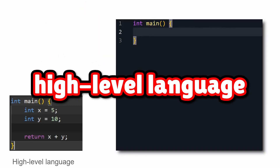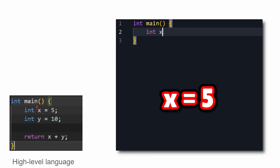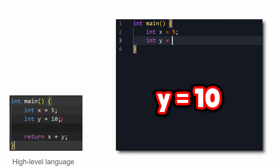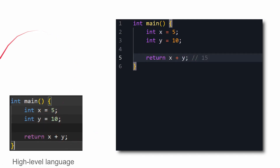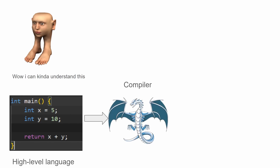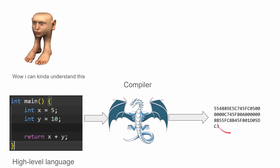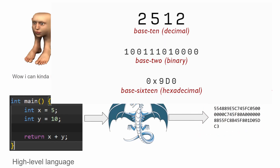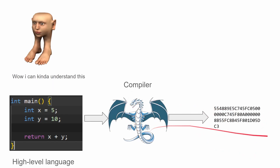So we start here with a high-level language. You can see we have x equals 5, y equals 10, and x plus y equals 15, right? It's understandable for humans — as you can see, this human right here says he can kind of understand this, which is good. Now what we do is pass it onto a special program called the compiler, and it compiles the program into binary. This is actually hexadecimal, which is used a lot to represent binary. So the compiler takes the code and converts it into binary.